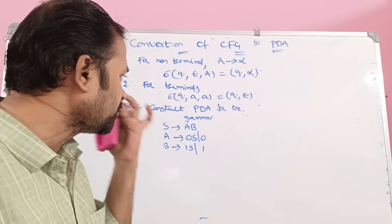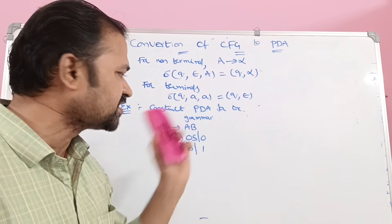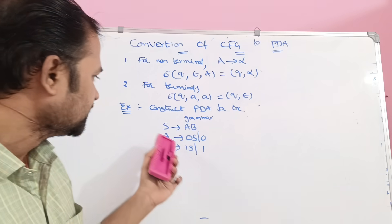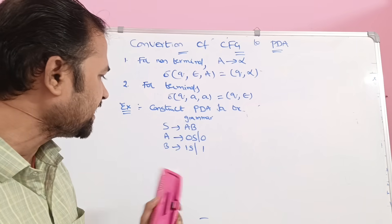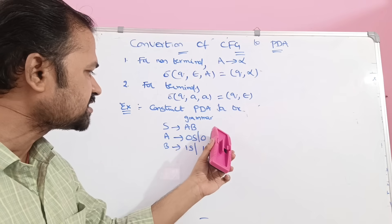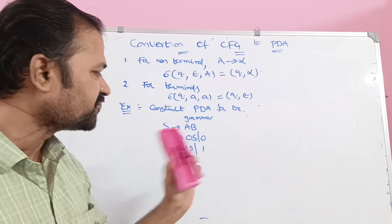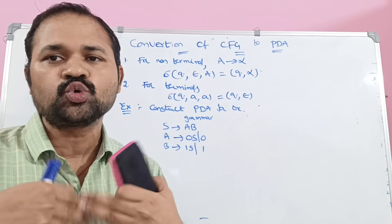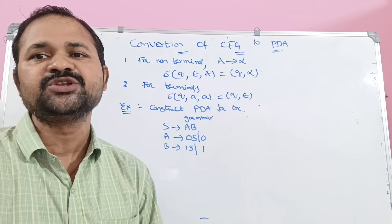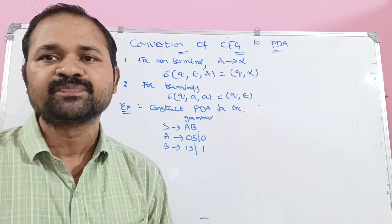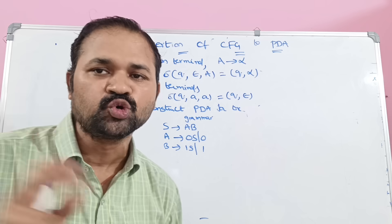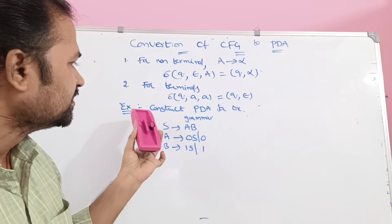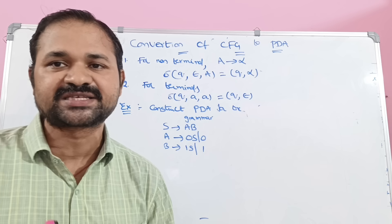Let us see this example: construct PDA for the grammar. This is the context-free grammar: S implies AB, A implies 0S or 0, B implies 1S or 1. In order to convert CFG into PDA, we have to follow mainly two rules. The first rule is for the non-terminal, and the second rule is for the terminals.